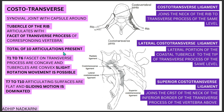There are 10 costotransverse articulations in total, divided into two groups. From T1 to T6, the facets on the transverse processes are concave and the rib tubercles are convex — these concave-convex articulations allow rotation movement. From T7 to T10, the articulating surfaces are flat and allow gliding motion. So rotation dominates at T1–T6 and gliding dominates at T7–T10.